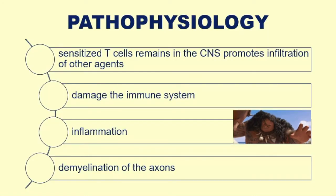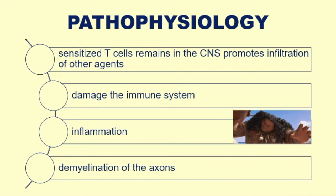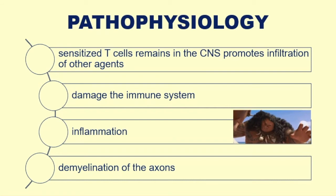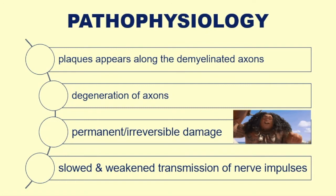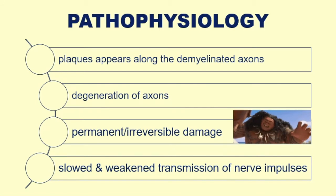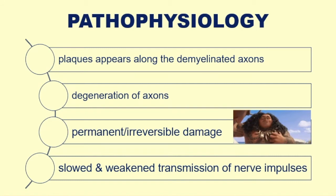In the pathophysiology, sensitized T-cells remain in the CNS and promote infiltration of other agents. These T-cells can be triggered by previous infection, continuously damaging the immune system and leading to inflammation. This inflammation causes demyelination of the axons, and oligodendroglia interrupt the flow of nerve impulses. As a result, plaques appear along the demyelinated axons, visible on CT scan and MRI, leading to degeneration of axons, permanent irreversible damage, and slowed or weakened nerve impulse transmission.